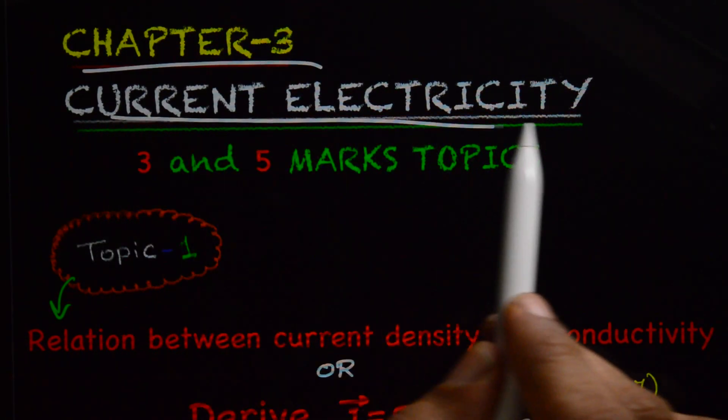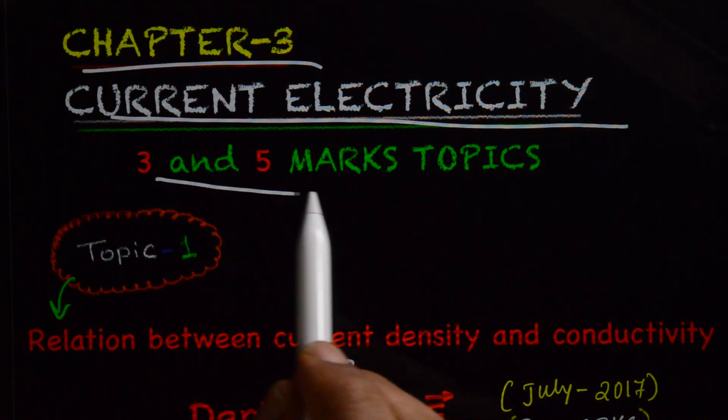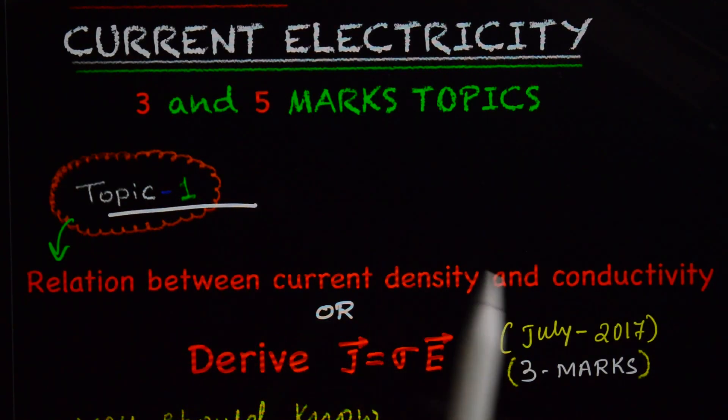Chapter 3, Current Electricity, 3 and 5 marks topics, topic number first.